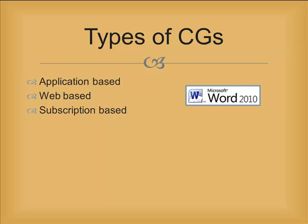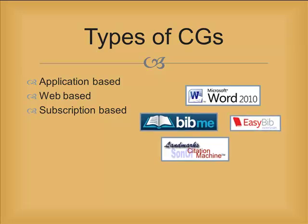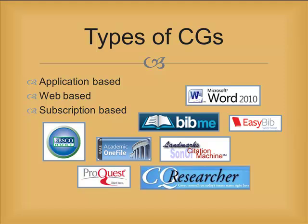Citations are now creatable in a variety of ways. If you're using Microsoft Word, you can use its embedded CG. There are web-based CGs like BibMe, EasyBib, and Son of Citation Machine. And many of the subscription services provided by colleges, such as EBSCO Host, ProQuest, CQ Researcher, and Gale, have built-in citation generators.